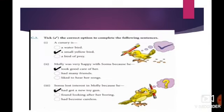So in exercise, question number C3 is tick the correct option to complete the following sentences. So here some sentences are there, and against each sentence some options are there in which only one option is correct. You have to tick the correct option. Let us start.